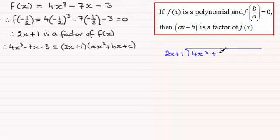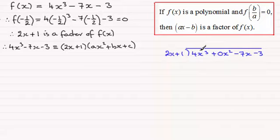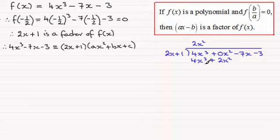Because we haven't got any x squared term, remember for algebraic long division we fill these spaces with zero — so 0x squared in this example — then we've got minus 7x and minus 3. In the usual way, we ask: what do we multiply 2x by to give 4x cubed? That would have to be 2x squared. Then we multiply 2x squared by all of 2x plus 1, giving us 4x cubed plus 2x squared.